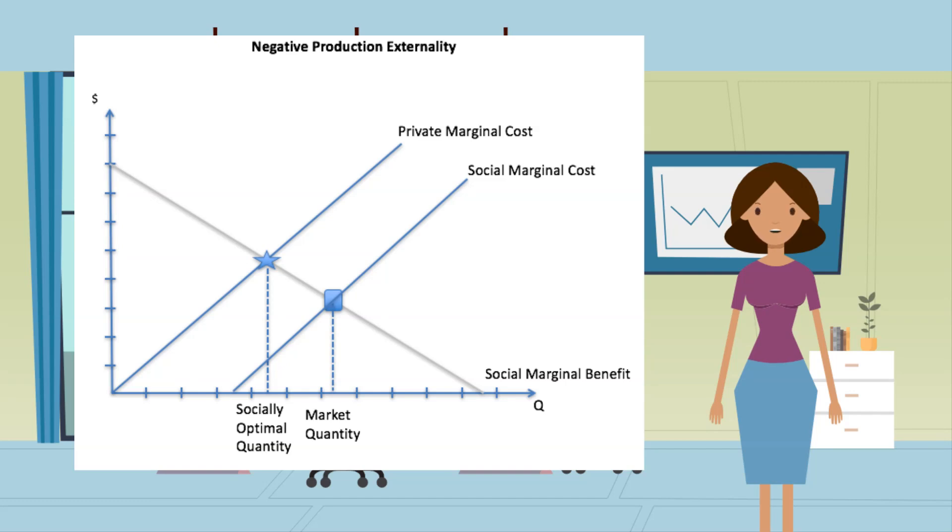Government policies proposed to reduce air pollution could include limits on output and taxes to include the cost of the pollution into the cost of the good.